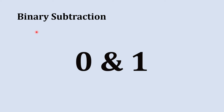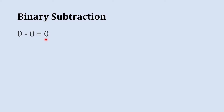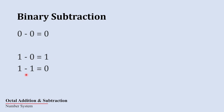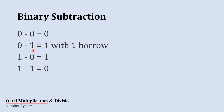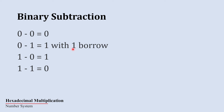When we subtract zero from zero we get zero. When we subtract zero from one we get one. When we subtract one from one we get zero. The last case involves borrowing: when we try to subtract one from zero, it is not possible, so borrowing is needed. The result is one and the borrow is one — I will explain why with the next example.